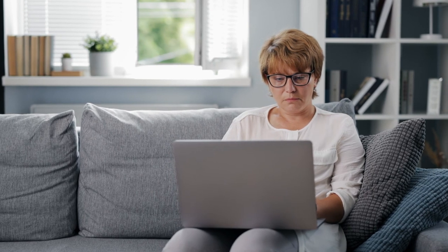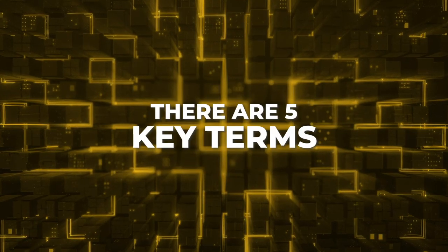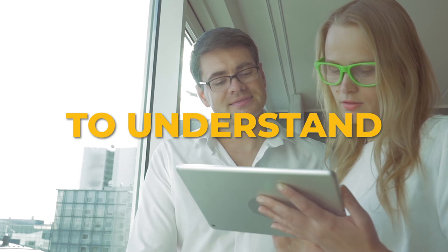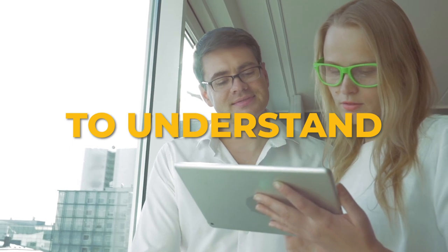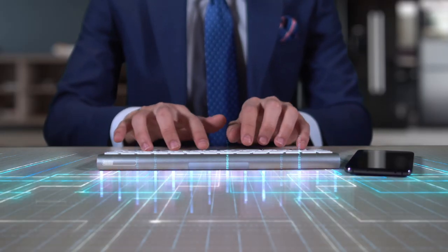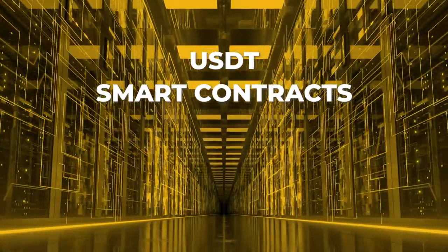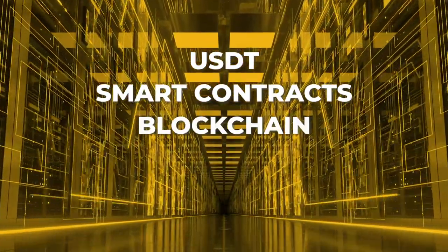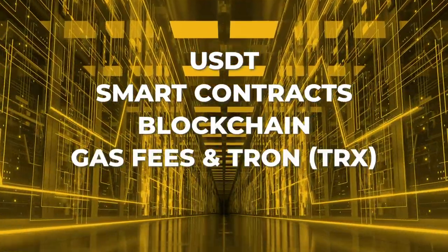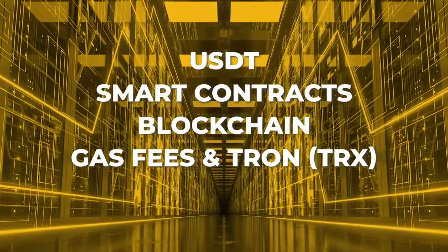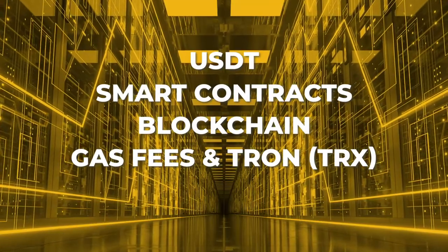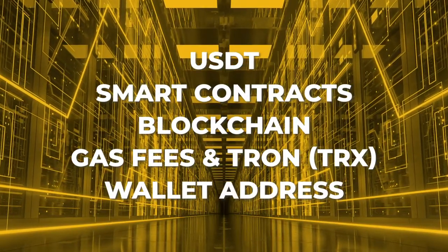For some, the terms above may be a whole new language, so let me explain. There are five terms that are important to understand and I'm going to explain each of them briefly: USDT, Smart Contracts, Blockchain, Gas Fees, and Tron also known as TRX, and Wallet Address.